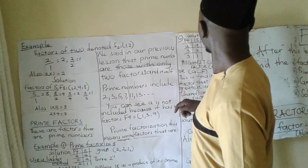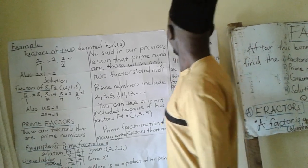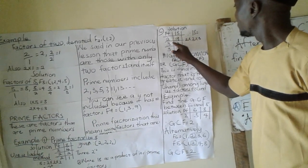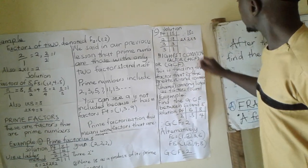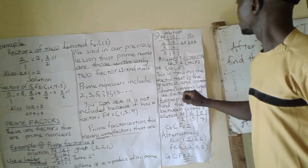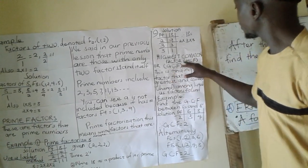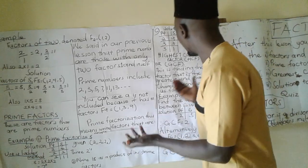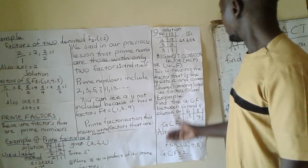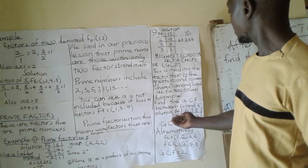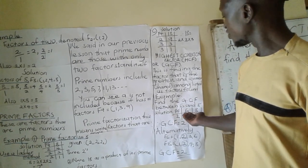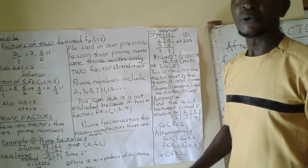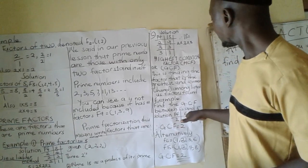If they say prime factorize 18, you can use the ladder method. You have 18 divided by 2 is 9, and 9 divided by 3 is 3, and 3 divided by 3 is 1. So 18 is the same as 2 times 3 times 3. The highest common factor or greatest common factor is finding the factor that is greatest and common — shared between the factors you listed. For example, find the greatest common factor between 6 and 8 using the ladder method, finding the prime factors of 6 and 8, starting with 2.